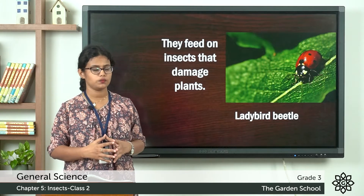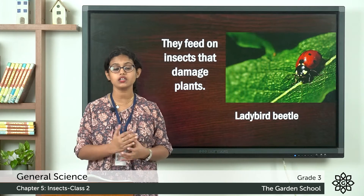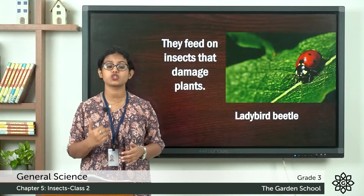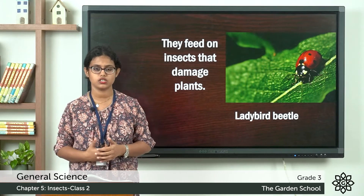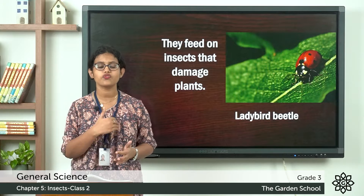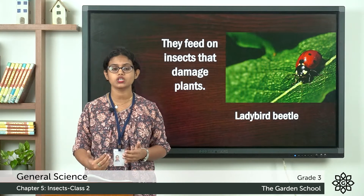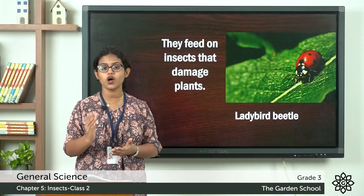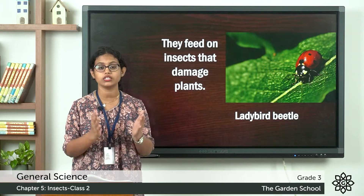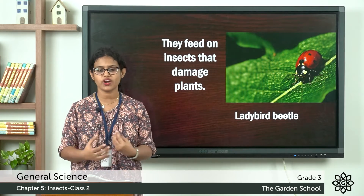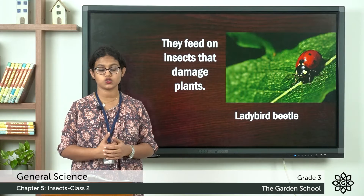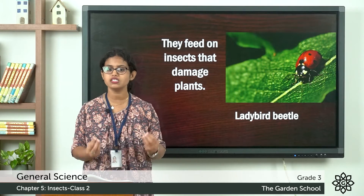There are insects which feed on other insects. Dragonflies, for example, feed on mosquitoes. And what about the ladybird beetle? This insect feeds on other insects that damage the plants. So the ladybird beetle, also called the ladybug, is called the farmer's friend, because it feeds on insects that damage the plants.